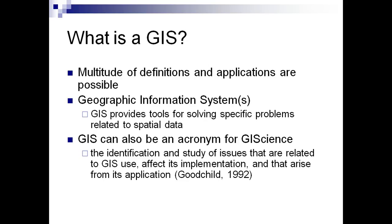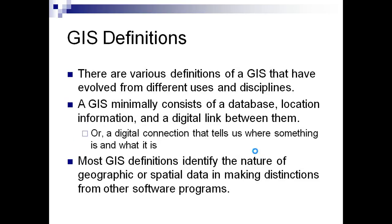When you talk about simple data it will be simply a database activity, but when you are talking about spatial data and the functionality which acts upon it, then it becomes GIS. GIS is also an acronym for Geographic Information Science — the identification and study of issues related to GIS use, its implementation, and the applications that arise from it, as given by Goodchild in 1992. A GIS minimally consists of a database, location information, and a digital link between them — a digital connection that tells us where something is and what it is.